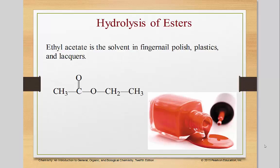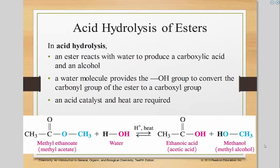This tutorial will be explaining the hydrolysis of esters, or in other words, how to break them apart. In acid hydrolysis, an ester reacts with water to produce a carboxylic acid and an alcohol, which is what it started with to begin with. A water molecule provides the OH group to convert the carbonyl group of the ester to a carboxyl group, and an acid catalyst and heat are required.